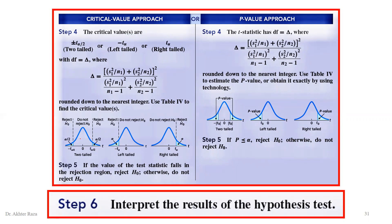There are two approaches: the critical region approach and the p-value approach. The major distinction here is the formula for degrees of freedom, which is a long formula: S1 squared over N1 plus S2 squared over N2, the whole quantity squared, divided by S1 squared over N1 whole squared divided by degree of freedom 1, plus S2 squared over N2 whole squared divided by degree of freedom 2. This formula is available in the formula sheet, represented by delta. Critical values differ for two-tail, left-tail, and right-tail tests.